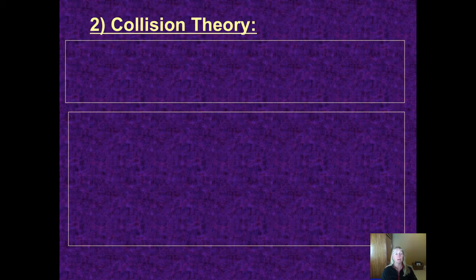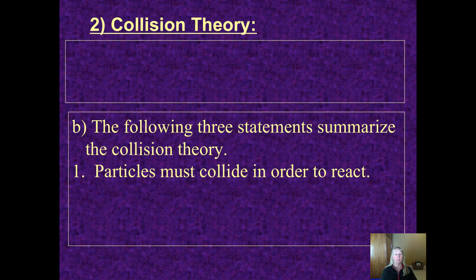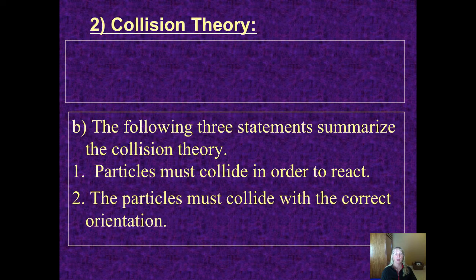For a reaction to occur, a number of things have to happen. We call this theory or model the collision model because the first tenet of this model is that a particle, like an atom or molecule, has to collide with another particle in order for a reaction to even begin to start. Not only do they have to smack into each other, they have to smack into each other at just the right angle. If they don't collide at the right angle, then that's not what we call a successful collision or an effective collision.